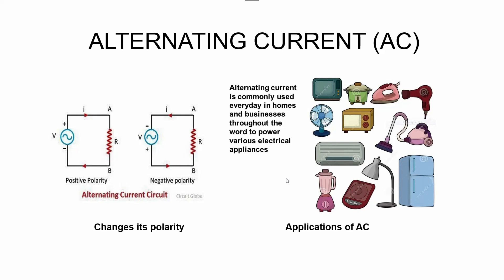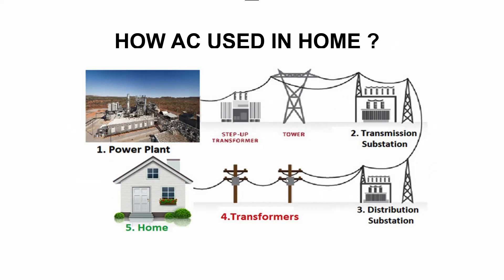Now we can see with one example how we generally get AC power — meaning alternating current — in our homes. You can see this slide. First, we generate power or electricity from our power plant. Then from there, it goes to the step-up transformer. Why does it go to the step-up transformer? As you may already know, a step-up transformer boosts the voltage. Then it goes to the tower. The power plant is already producing some voltage, and we use the step-up transformer to further boost that voltage before sending it to the tower.